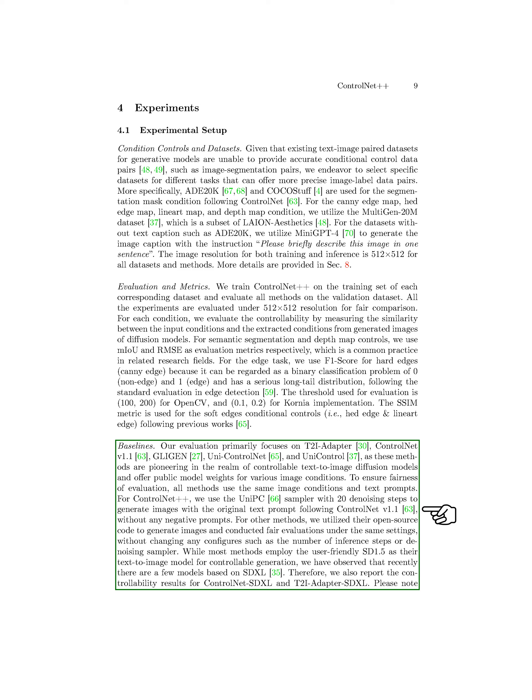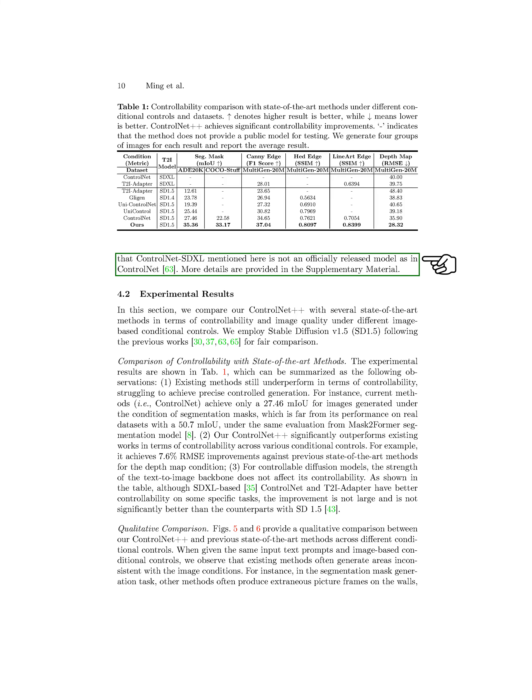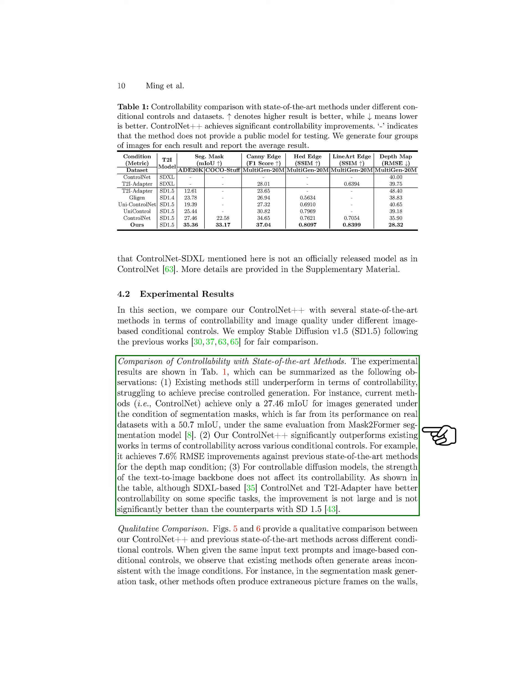Our evaluation mainly focused on T2i Adapter, ControlNet version 1.1, GLIGEN, UNI ControlNet, and UNI Control as leading methods in controllable text-to-image models. To ensure fairness, all methods used the same image conditions, text prompts, and configurations. We also included results for ControlNet SDXL and T2i Adapter SDXL, though ControlNet SDXL is not an officially released model. When comparing ControlNet++ with other methods, we found that existing methods struggle with precise controlled generation, while ControlNet++ outperformed previous works in controllability across various conditional controls.